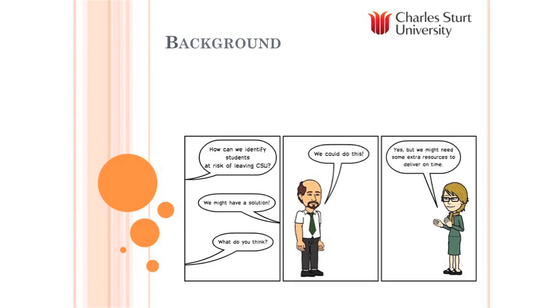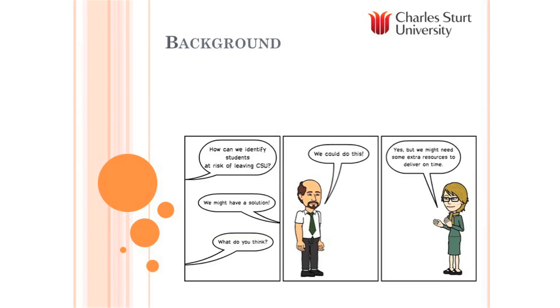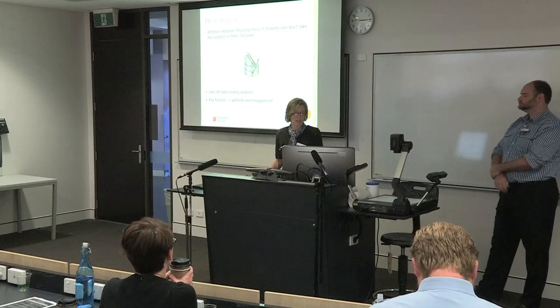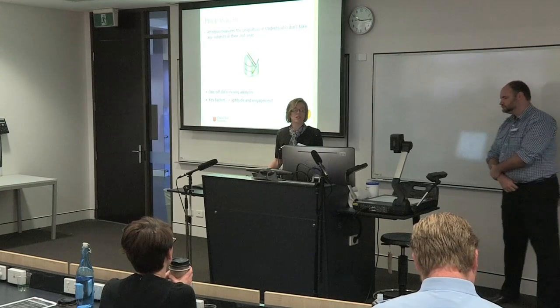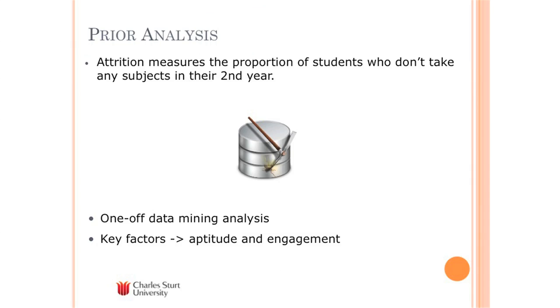This all started with a request from the business. We were asked by the Dean of Students: how do we best identify students who are at risk of leaving CSU? There were a few different solutions being considered. My team was asked to consider them and come up with a recommendation. Tim relatively quickly said he thought we could do it in-house — we had the software tools and expertise — but we also flagged early on that we'd probably need some external help because of the timeframes involved. The definition of attrition we're using here is the proportion of students who don't take any subjects in their second year — the measure we were trying to predict.